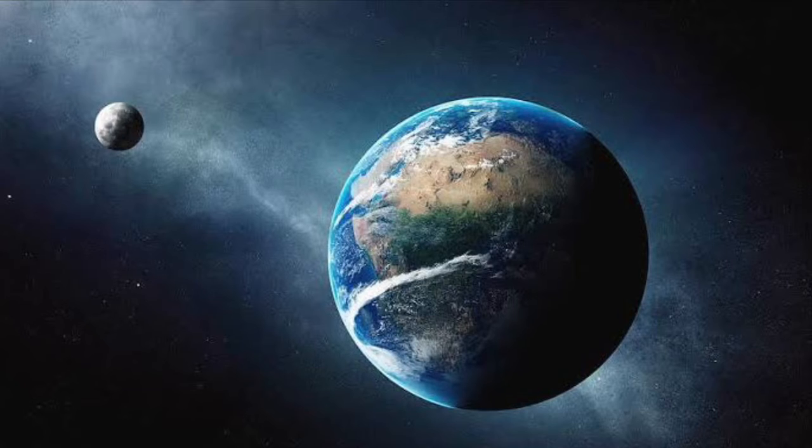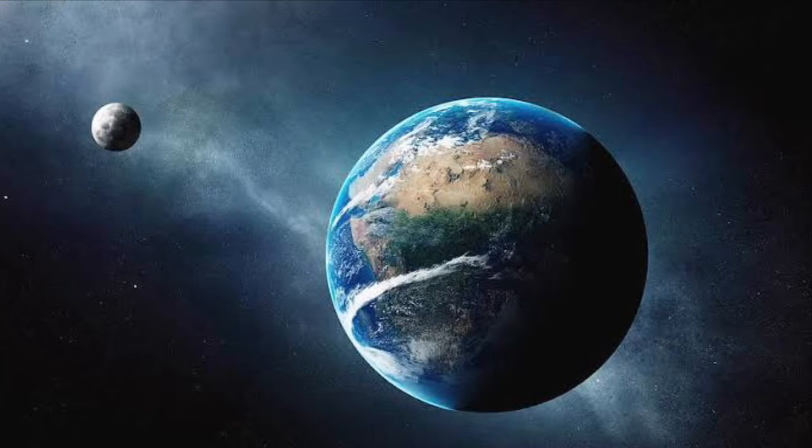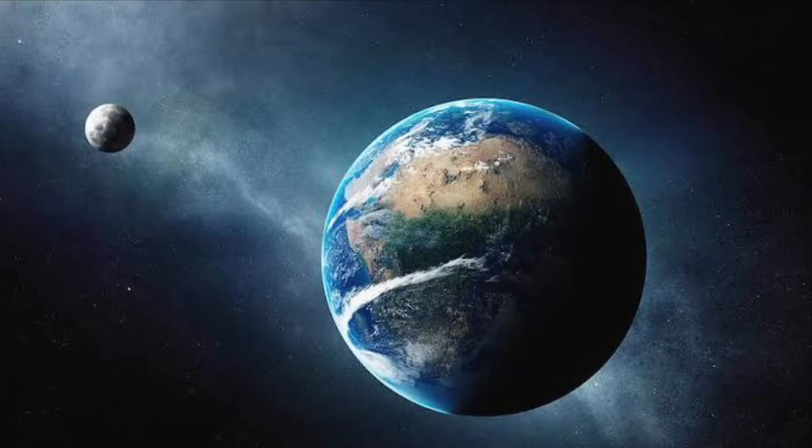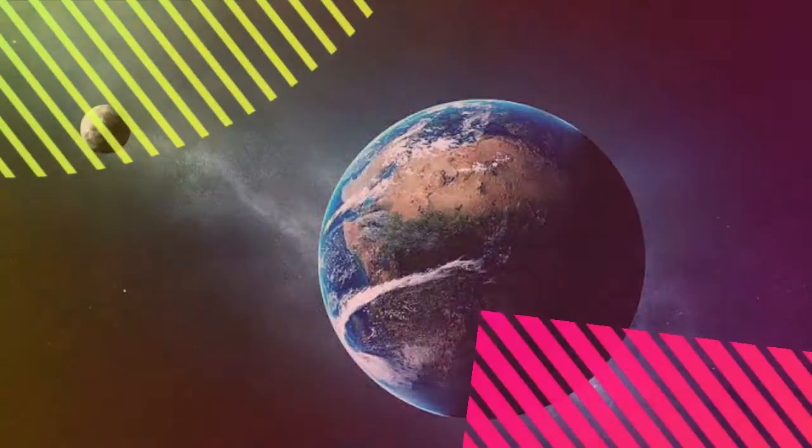It takes 28 days for the moon to orbit around the Earth, but the moon isn't actually spinning, which is why we only see one side of the moon.